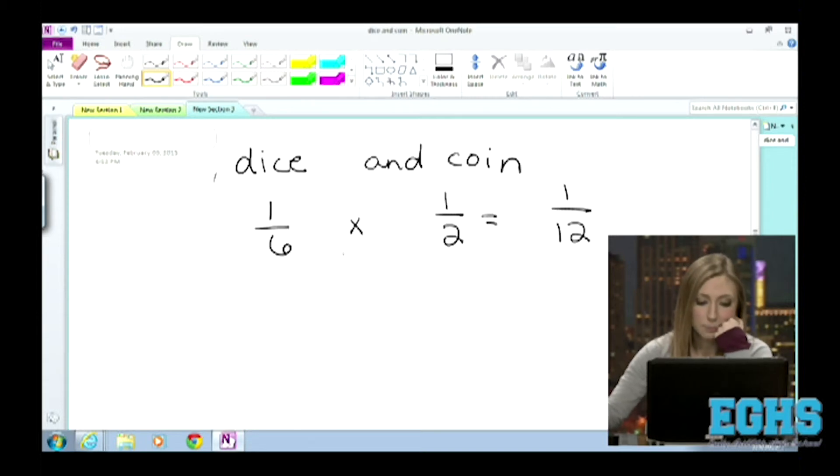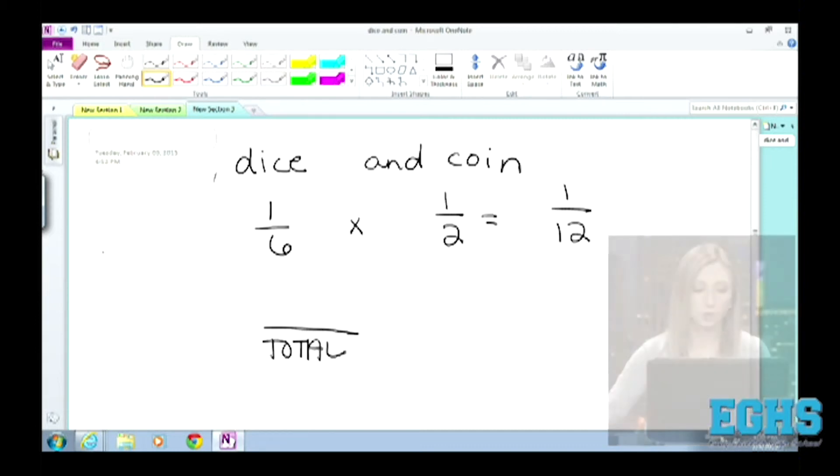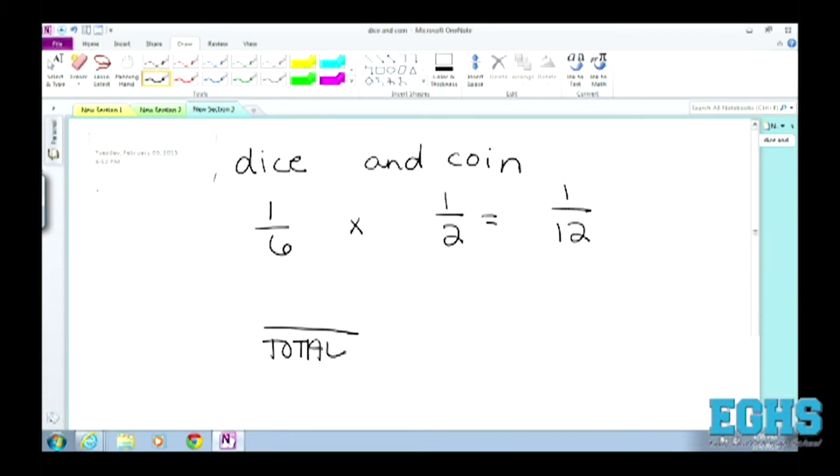Now, the reason why that is, because when you said that the denominator is the total number of outcomes, I'm going to make a tree diagram on the left of the screen right now just so you can see. Whenever you're rolling a dice, the possibility, what you can do is you can roll a one, you can roll a two, you can roll a three, four, five, or six.